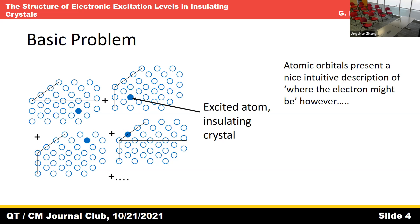For instance, you take the limit as all the atoms go far apart — those should be the states, right? In infinitely separated atoms, the electrons are going to be in these atomic orbitals. They provide a very nice description of where the electron might be, like on which atom. Here's a cartoon: for instance, you can have two wave functions for an atom — the ground wave function and then some excited state.